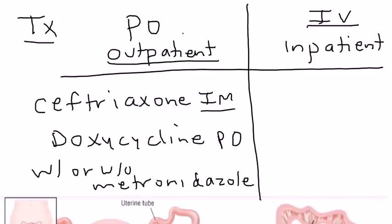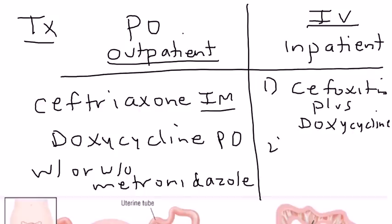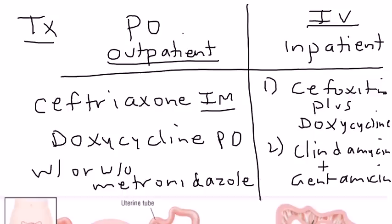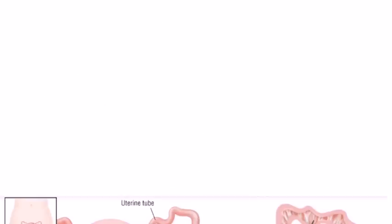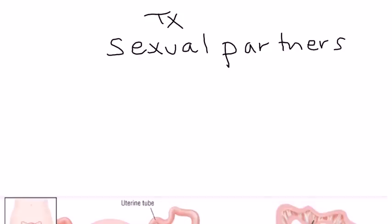Inpatient IV treatment is done if you feel the patient will not have compliance or if the patient is very severe in their symptomatology — decided by a physician based on presentation. One inpatient regimen is a cephalosporin like cefoxitin plus doxycycline. Another option for patients allergic to penicillin is clindamycin and gentamycin. You must also treat the sexual partners, since this is an STD — the patient should inform their partner that they need to be tested and treated as well.